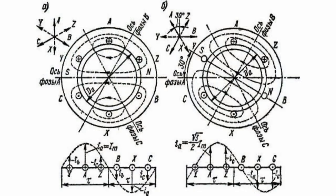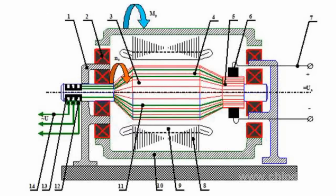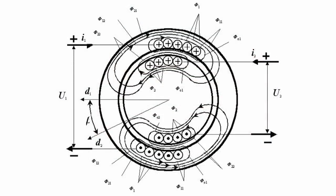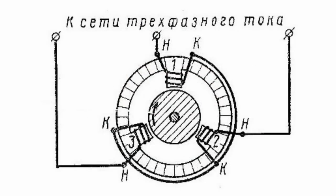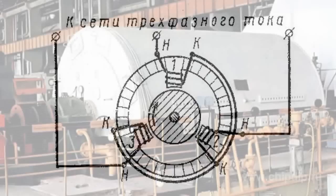The mechanical energy from the turbine is converted into electric power due to a rotating magnetic field. The magnetic field is induced by the constant voltage current flowing in the rotor's copper winding. This causes three-phase alternating current and voltage in the stator's windings.